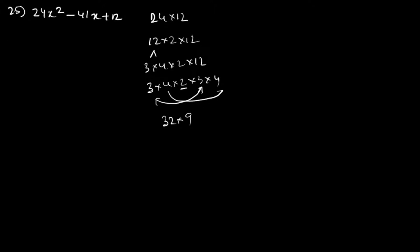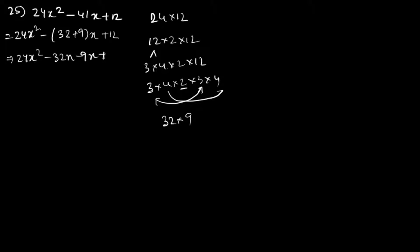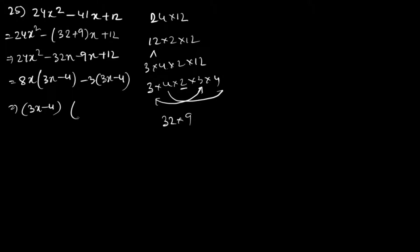So: 24x² minus 32x plus 9x plus 12. Taking 8x common gives (3x minus 4), and taking 3 common also gives (3x minus 4). So the answer is (3x minus 4)(8x minus 3).